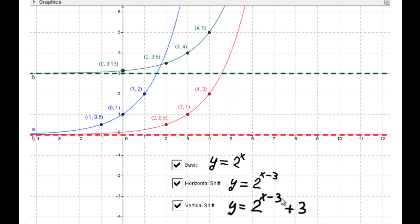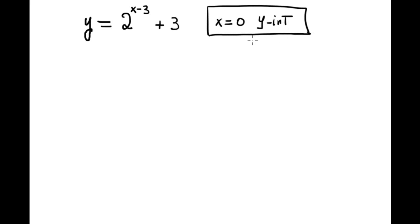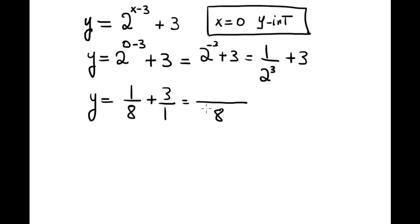Let's find the y-intercept in detail. The equation is 2^(x-3) + 3. Set x = 0: y = 2^(0-3) + 3 = 2^(-3) + 3 = 1/8 + 3. The least common denominator is 8, so this equals 1/8 + 24/8 = 25/8.